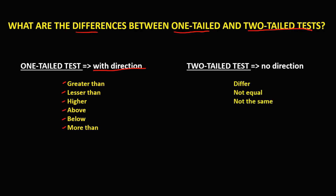For two-tailed test, this is a test with no direction. These are the examples: differ, not equal, and not the same.